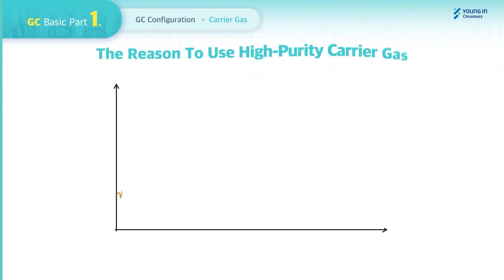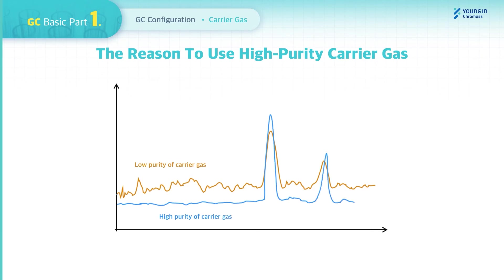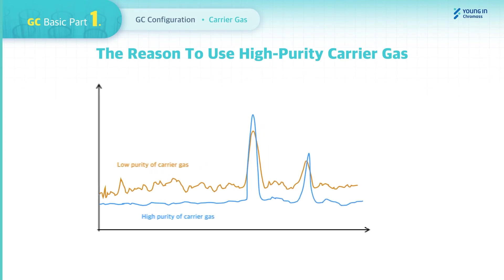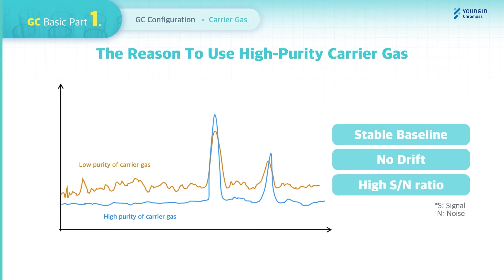Why should we use high purity of Carrier Gas? If you use low purity Carrier Gas, it will cause an unstable baseline with drift and relatively lower sensitivity due to high noise. When you use high purity Carrier Gas, you get a more stable baseline and better sensitivity through a high signal-to-noise (S/N) ratio, compared to low purity Carrier Gas.